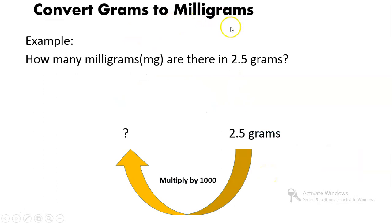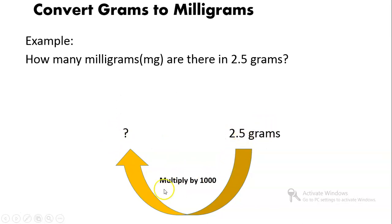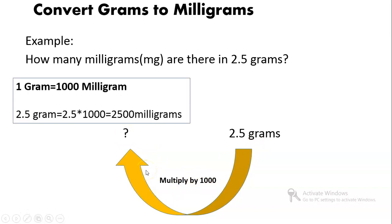To convert grams to milligrams: How many milligrams are there in 2.5 grams? You have to multiply by 1000. So 2.5 grams multiplied by 1000 equals 2500 milligrams. That is because 1 gram equals 1000 milligrams, so 2.5 grams is 2500 milligrams.